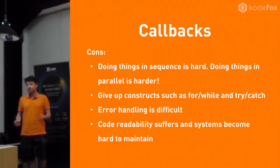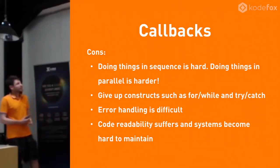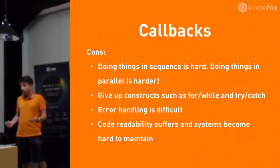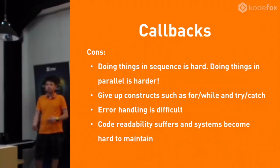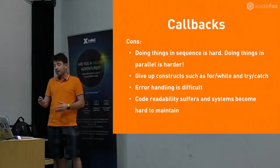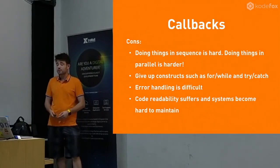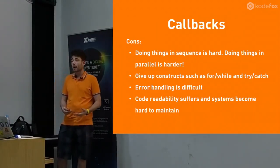What are the downsides? Doing things in callback style is really difficult. Doing things in sequence is difficult, and doing things in parallel is even harder. You give up your constructs that you're familiar with, like for, while, and try-catch. Those are things that people coming to JavaScript from PHP, Java, or almost any other language don't understand why you can't do. Error handling is difficult - you always have to check the error parameter. And your code readability goes downhill pretty fast, making systems hard to maintain.